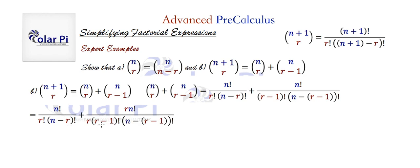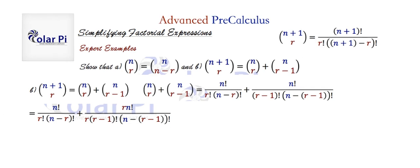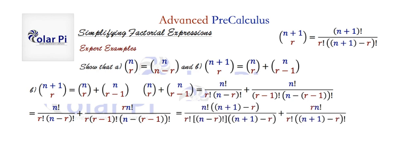So first we rewrite this as r factorial, then we rewrite this as n plus one minus r factorial, and then we multiply the first quotient top and bottom by n plus one minus r. If we do all that, then this is what we get: this r factorial matches, this n factorial matches, this n minus r factorial matches, and we multiply top and bottom by n plus one minus r. In the second quotient, this has turned into r factorial as it should.